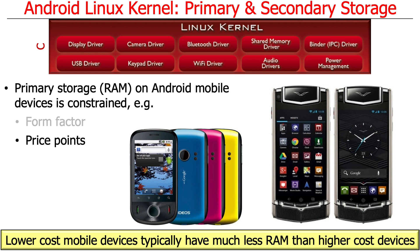There are also price point issues. People typically don't want to spend $4,000 on a high-end phone the way some might on a laptop — it just wouldn't have a market. Most people want cheap phones built into their cell plan or a couple hundred dollars at most. The price point for high-end smartphones is around $700 to $800, not $4,000. That's also a driver that keeps down the amount of memory available because people don't want to pay that much.